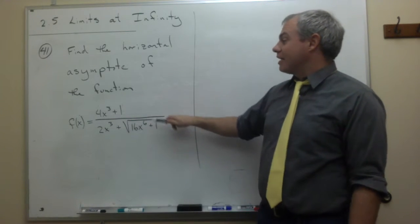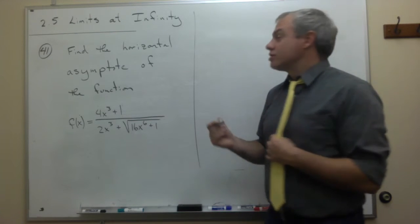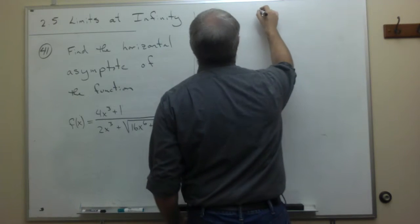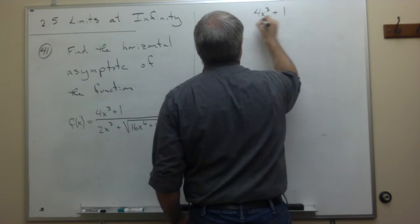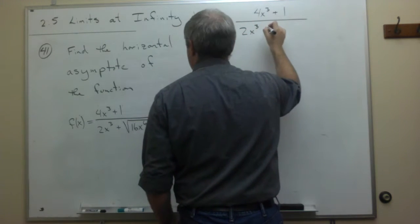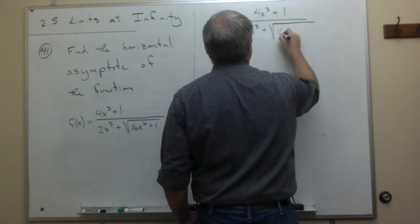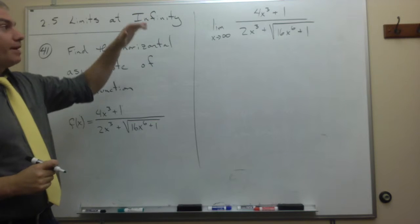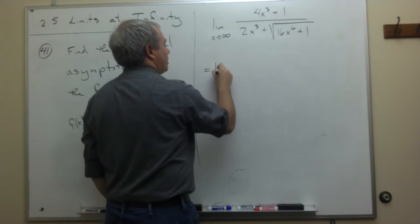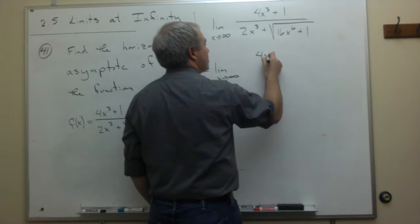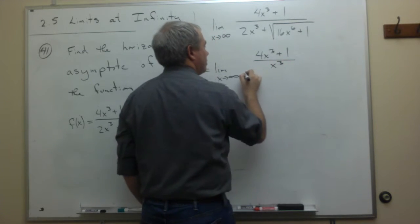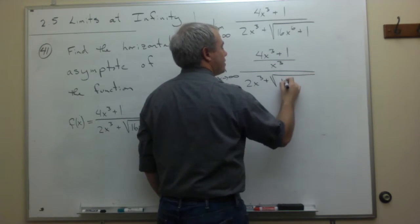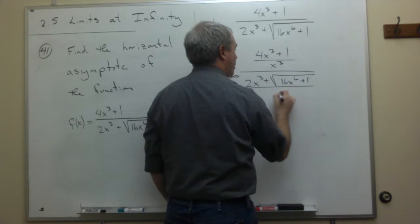So let's divide the top and the bottom by x³ and see what comes out. What I'm doing is taking the limit as x goes to infinity of this expression. Rewriting: this is (4x³ + 1) divided by (2x³ + √(16x⁶ + 1)), and now I'll divide the top and the bottom by x³. So this becomes the limit as x goes to infinity of (4x³ + 1)/x³ divided by (2x³ + √(16x⁶ + 1))/x³.